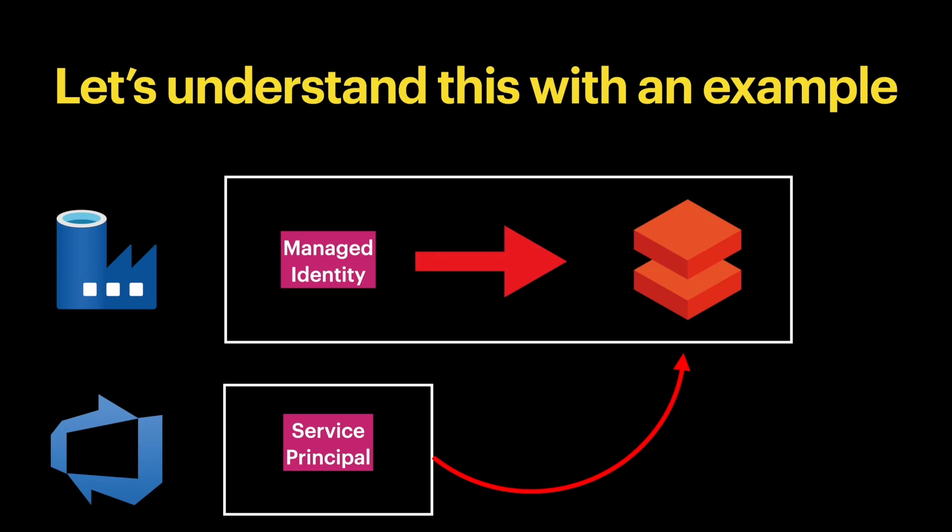In the second scenario, consider Azure DevOps needs access to Azure Databricks. You cannot do this directly using managed identity, because there is no managed identity for Azure DevOps. So you need to use a third-party ID called a service principal in the middle to get access to Azure Databricks.